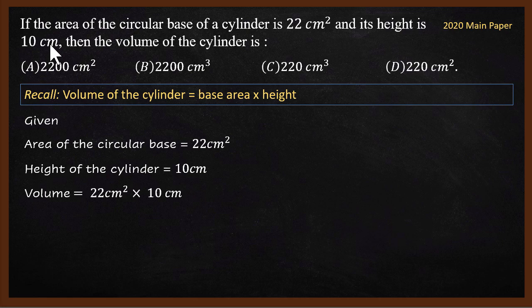Actually, for solids it is just base area by height. Cube, cuboid, any solid, it's base area by height. What is the base area in this? The base area is 22 cm². What is the height? Height is 10 cm. So we multiply, 220 cm³. 220 cm³ we have option C.